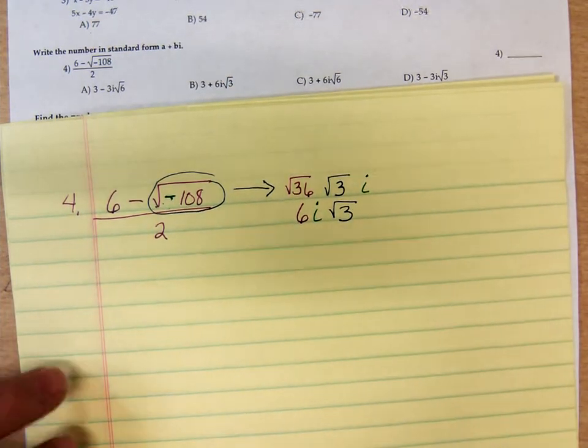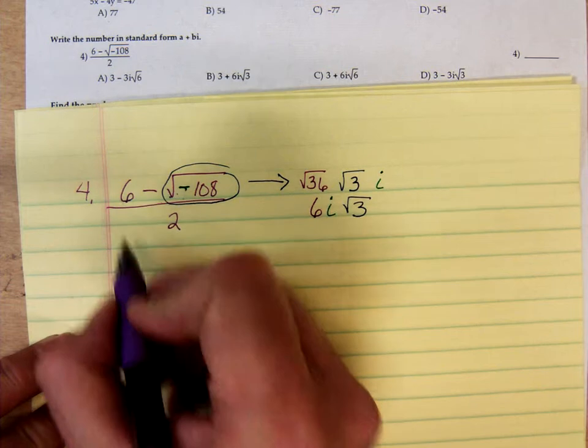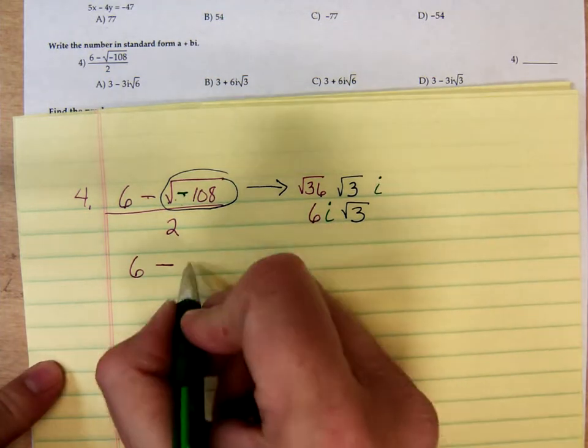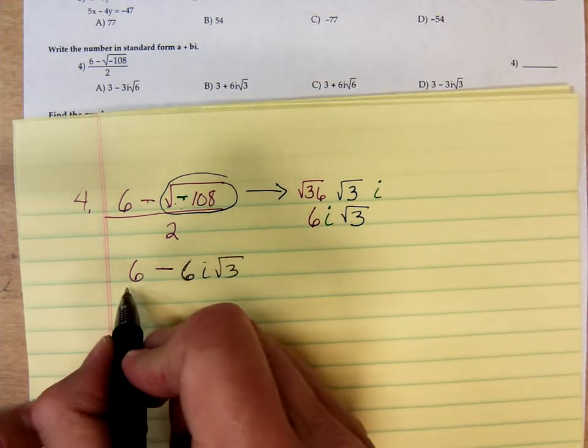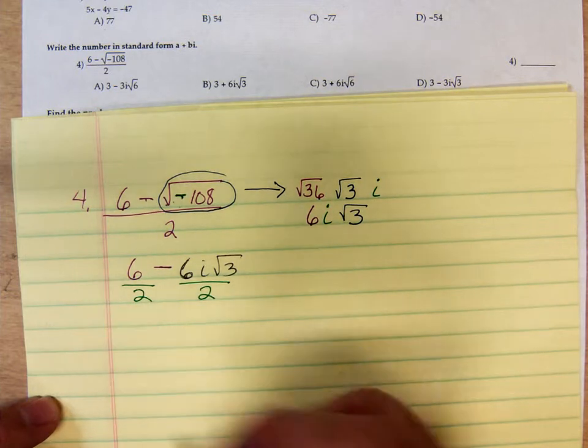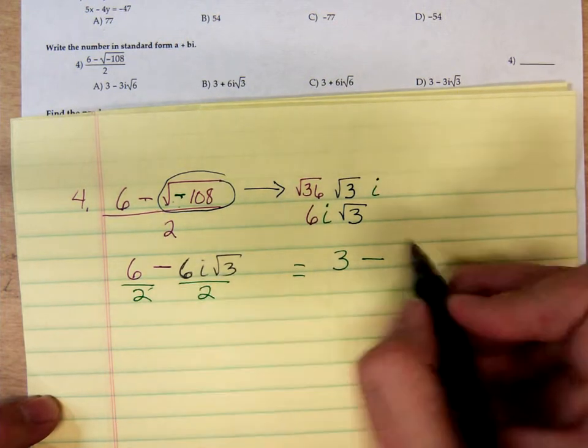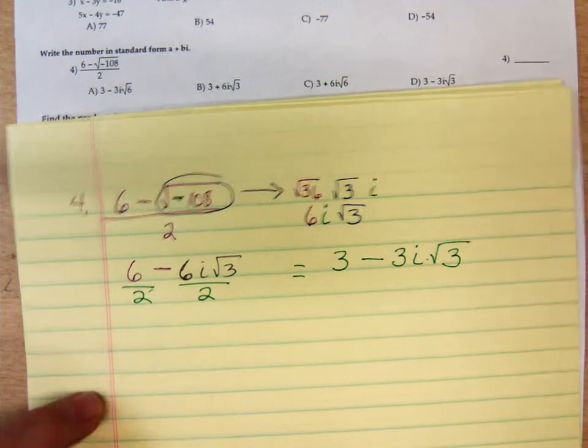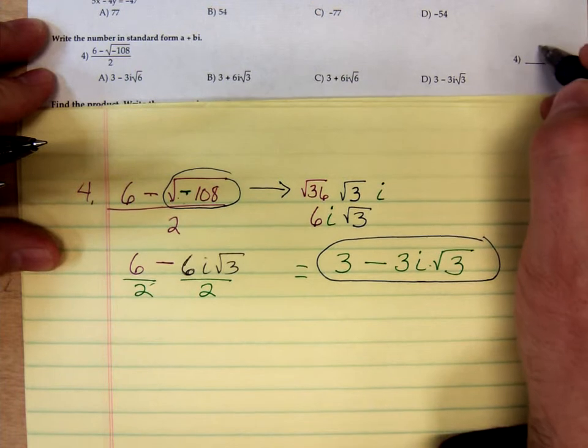So now let me rewrite this replacing the square root with 6i square root of 3. So I have the purple 6 minus 6i square root of 3 all over 2. Let's just put them each over 2 so we can easily cancel. And we'd be left 2 goes into 6, 3 minus 2 goes into 6, 3i square root of 3. So 3 minus 3i square root of 3. There's a lot of 3's here. D.